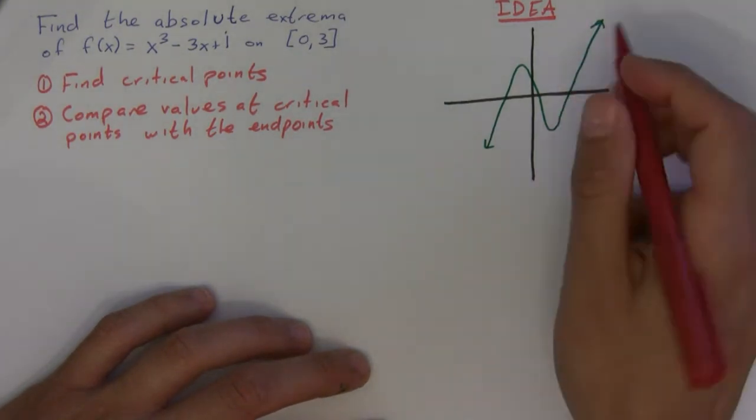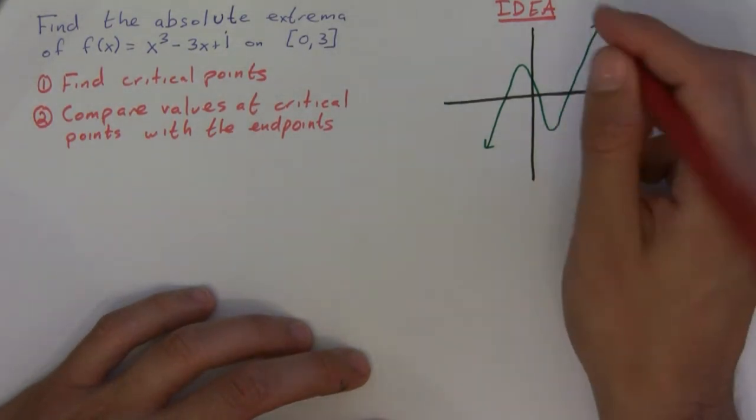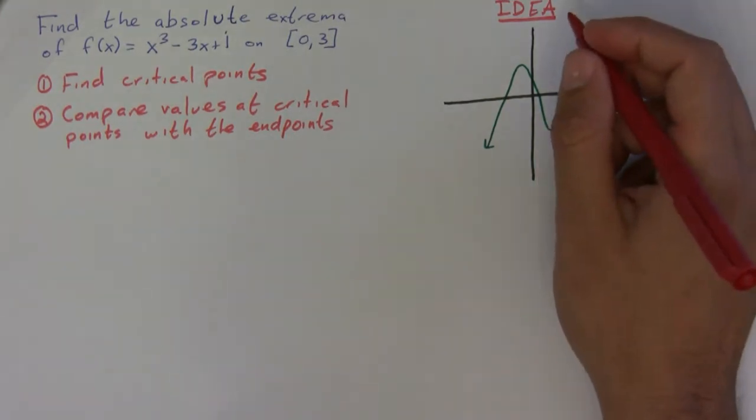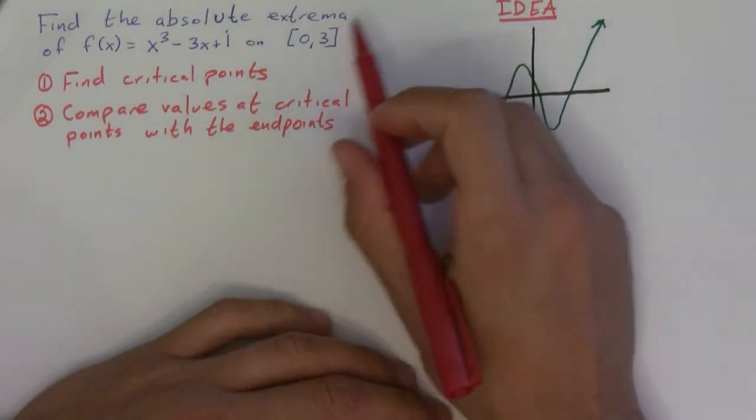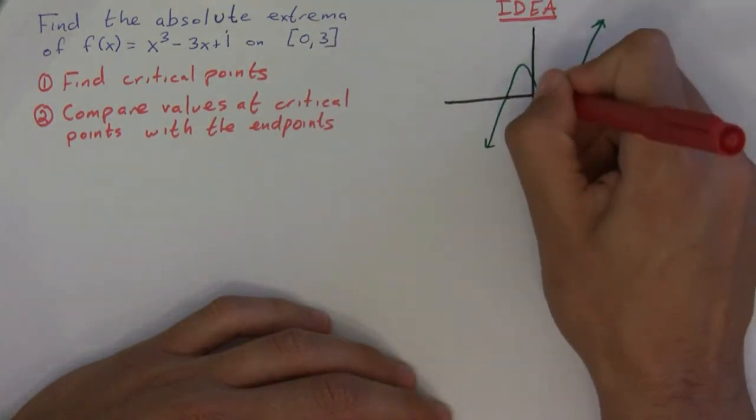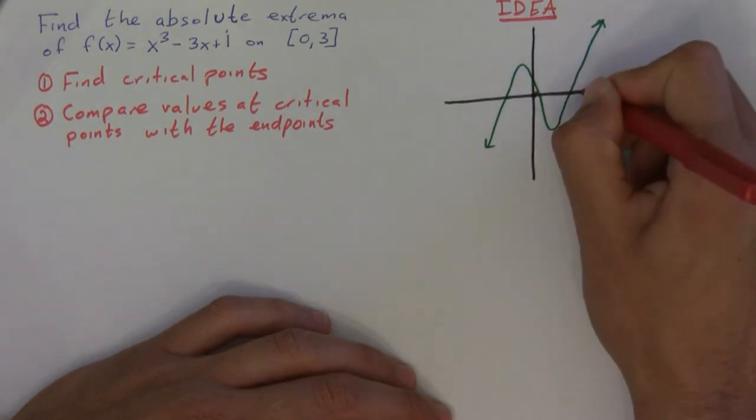Okay, so this is just a very rough sketch, but let's say you're looking for the absolute maximums and minimums of this function from zero to let's say here, three.